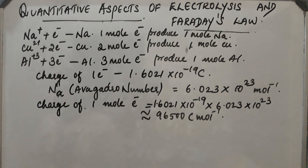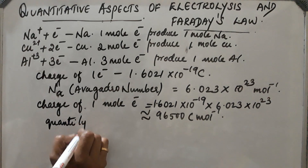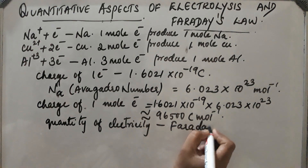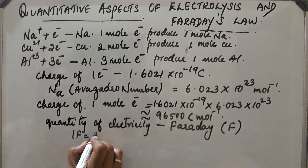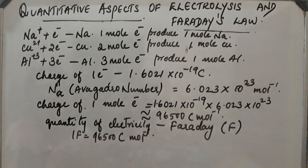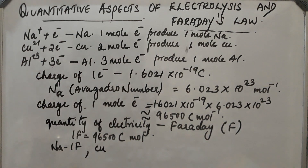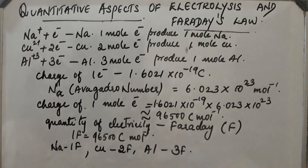The quantity of electricity is normally expressed in Faraday, which is a unit. For sodium, one mole of electrons is required, so the quantity of electricity is 1 Faraday. For copper, 2 moles of electrons are required to produce 1 mole of copper, so 2 Faraday is required. For aluminium, 3 Faraday is required. So, depending upon the number of electrons required for reduction, the Faraday value changes.